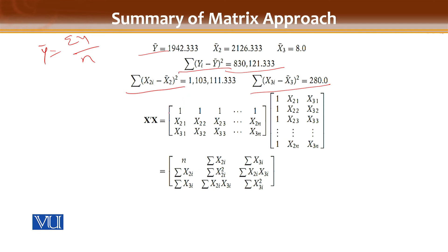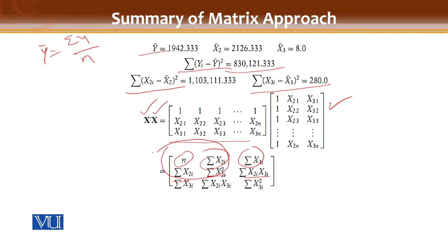The matrix X-transpose multiplied by X gives a result where the components include: n (number of observations), sum of x2, sum of x3, the squared sum of x2, and the cross product x2*x3. To remind you, in the two-variable case X'X has only four components. From here we find the beta values.